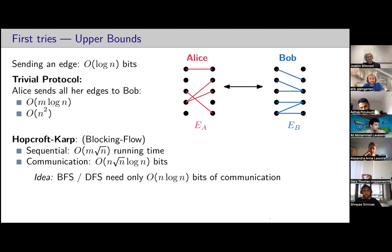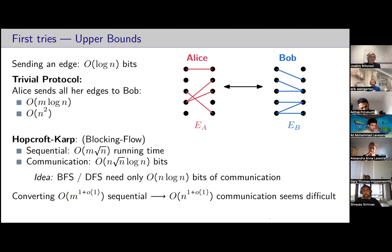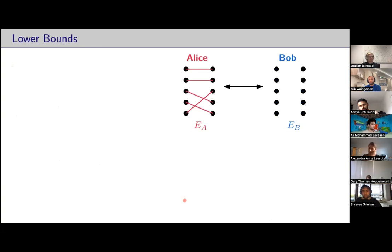So we don't need to send all edges, but can we do better? We know there is an almost-linear-time sequential algorithm. Maybe we can do something similar — mapping m in the sequential setting to n in the communication model. But the breakthrough max flow algorithm is quite complicated and uses a lot of continuous optimization, so this seems quite difficult. But it still opens the question: maybe there is some way to get linear in the number of vertices, like O(n).